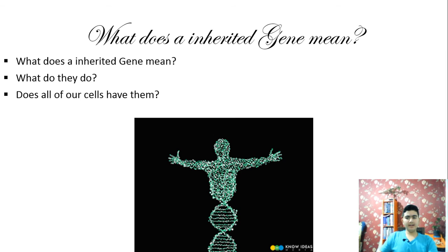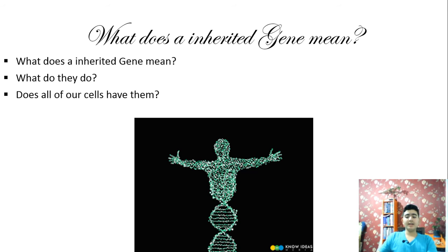You began as a cell stocked with DNA inherited from your parents. The replication of that DNA prior to each cell division transmitted copies of that particular DNA to what eventually became the trillions of cells of your body. As the cells grew and divided, the genetic information encoded by the DNA directed your development.